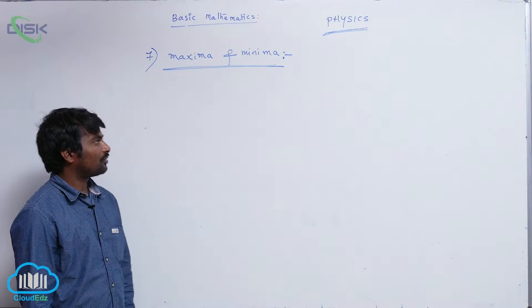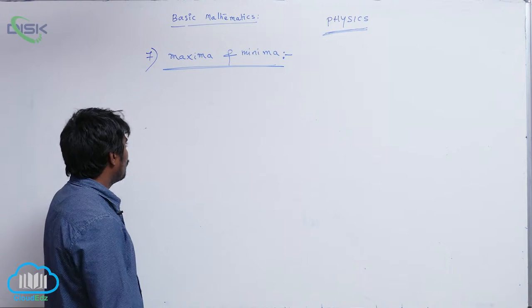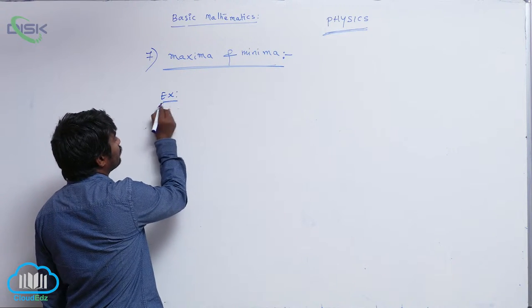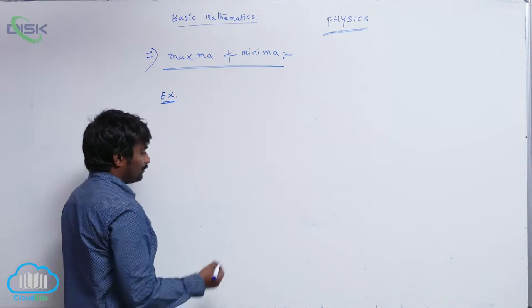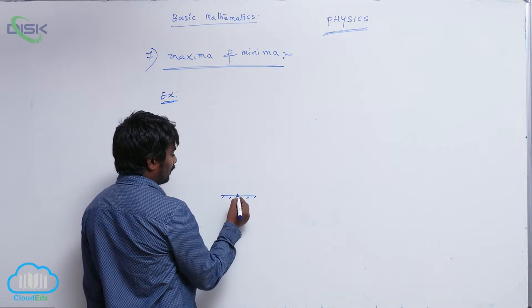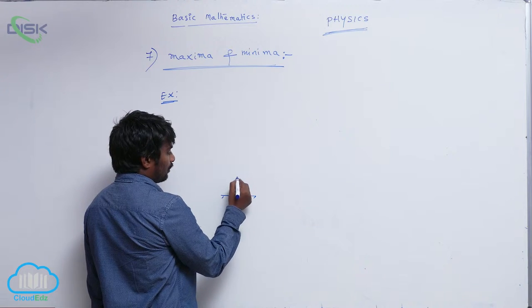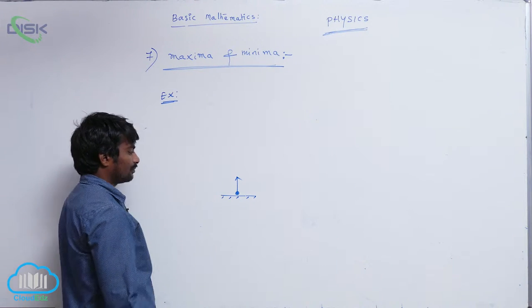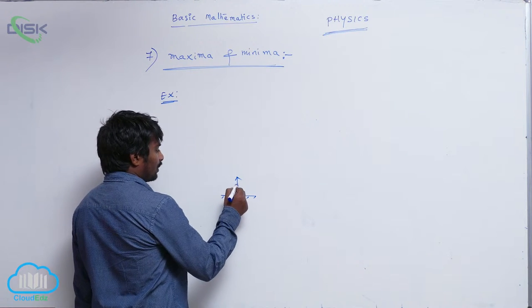Let us see one example from physics. We know if I project a body in a vertically upward direction, its velocity gradually decreases.